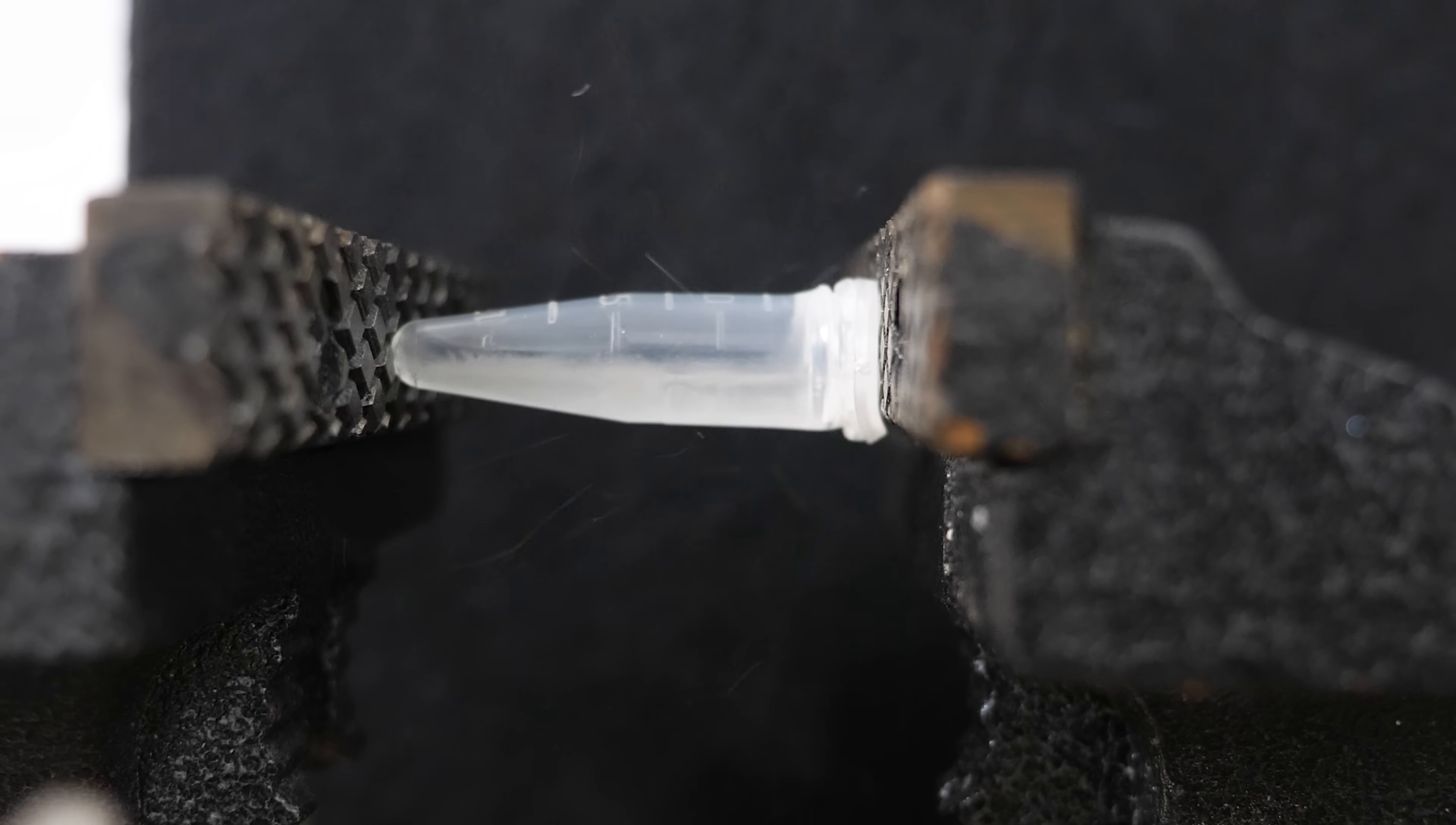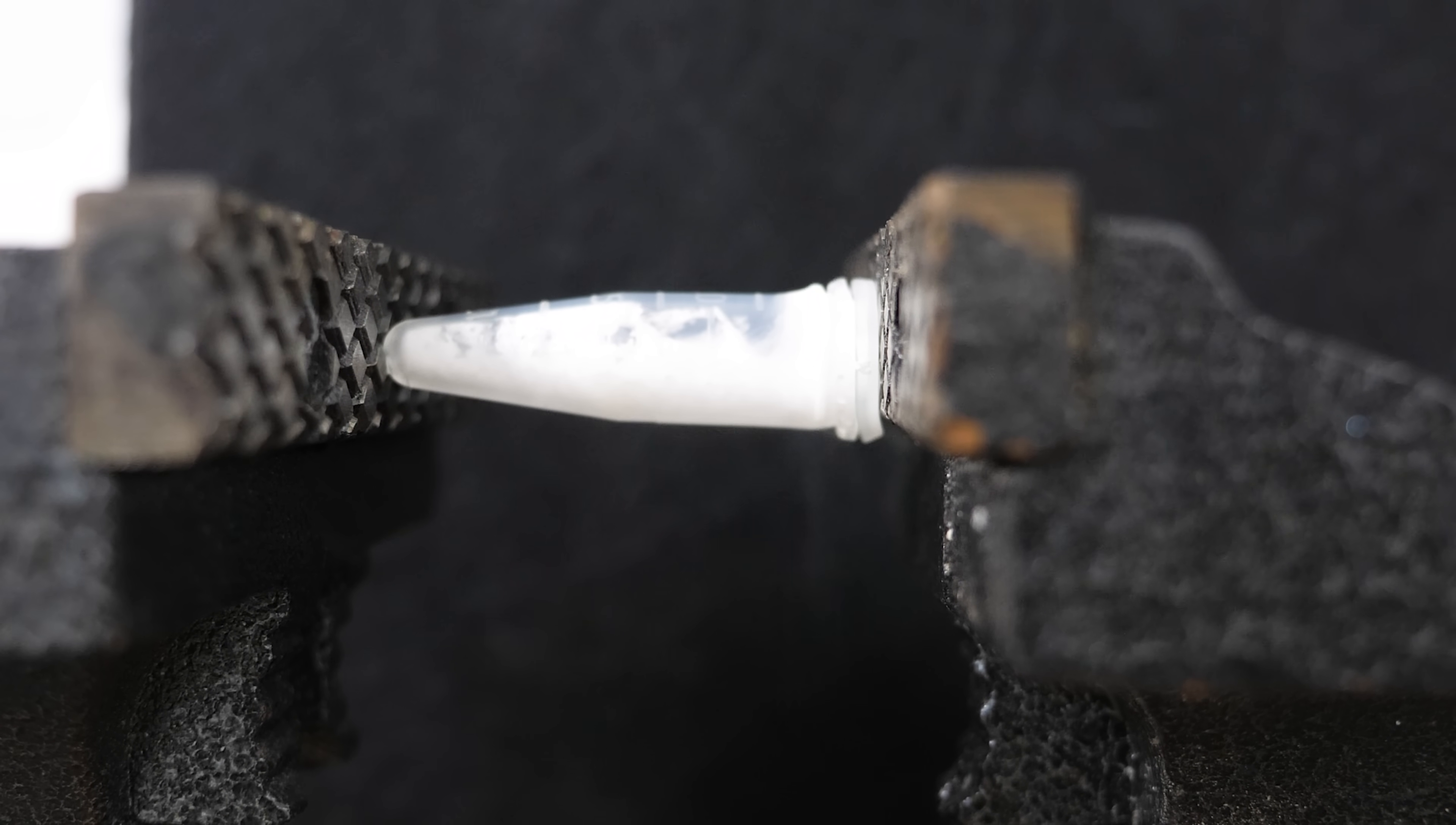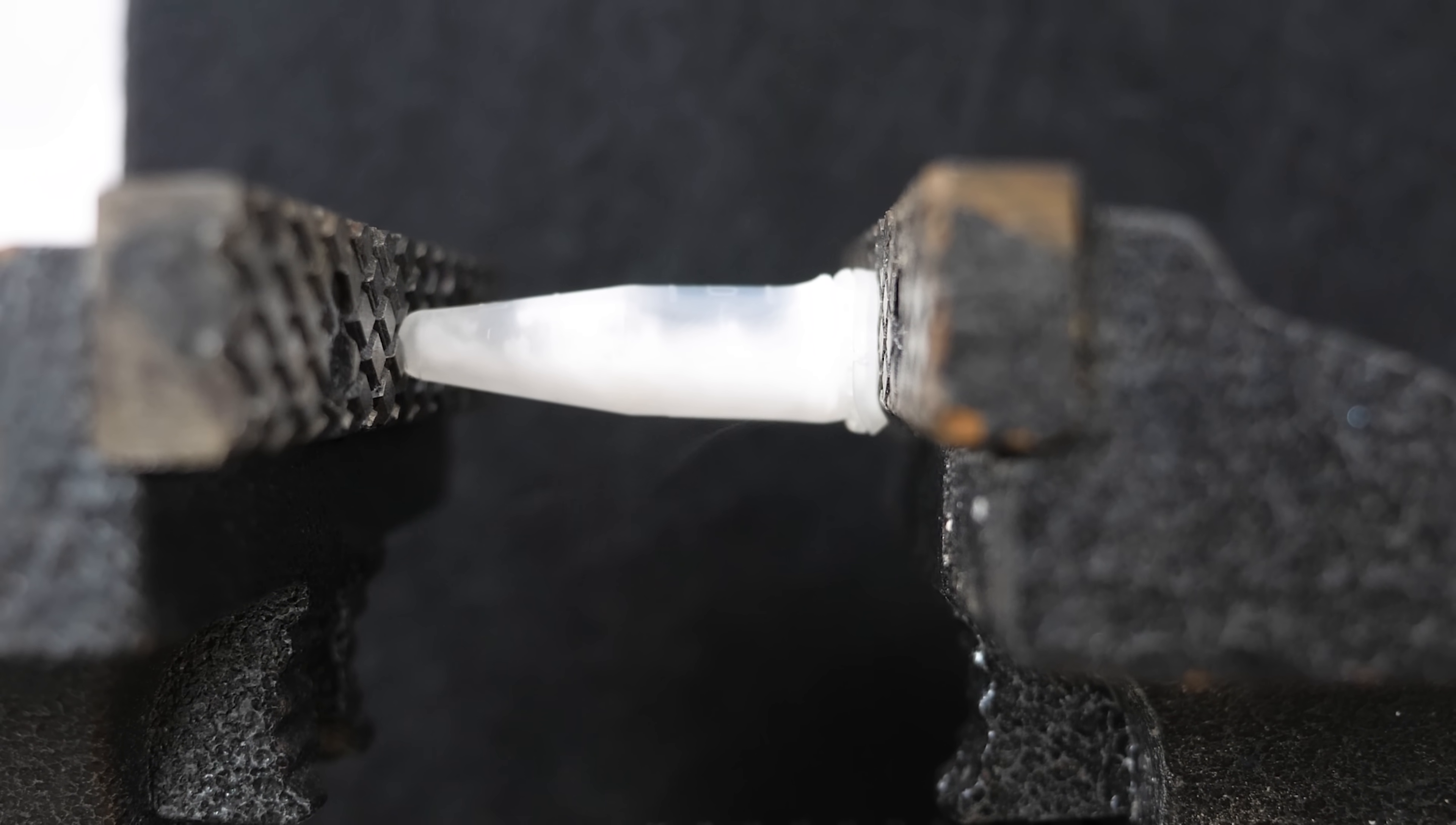But now if I release the pressure, the liquid will quickly freeze again because when you release a pressurized gas, it gets colder, so the liquid quickly turns to a solid again because it gets colder when I release the pressure. But then if I pressurize it again by tightening the vise, it'll melt into a liquid again.